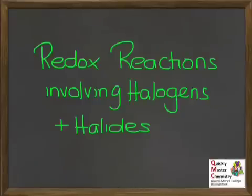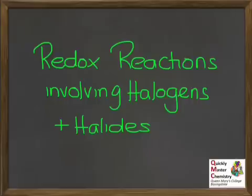This presentation applies ideas about redox reactions to reactions involving halogens and halide ions. By the end of the presentation, you should be able to say whether or not a particular combination of halogen and halide ion will undergo a redox reaction together. You should be able to explain your reasoning in terms of the oxidising ability of the halogens and the trend for this ability in their group of the periodic table, and write balanced equations for where a reaction does occur.